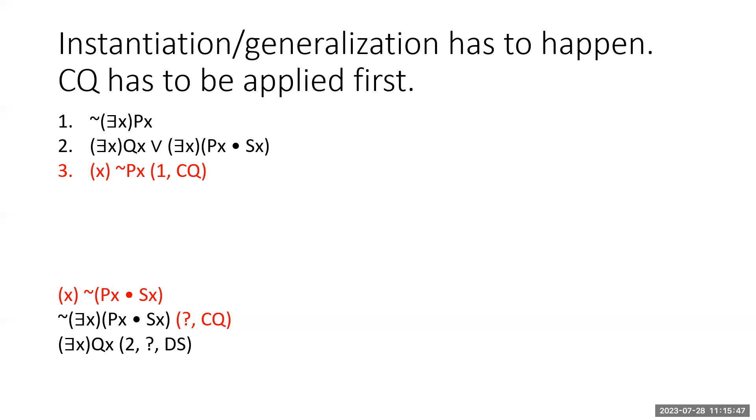So how are we going to do that? Well, in order to do that, we're probably going to have to do some instantiation and generalization. If you check out premise one here, it says it's not the case that something is P. And intuitively, you can see that if it's not the case that something is P, then it's not the case that something is both P and S.